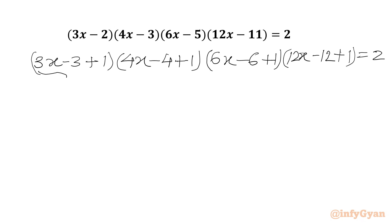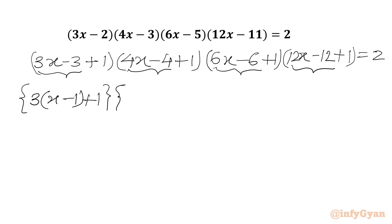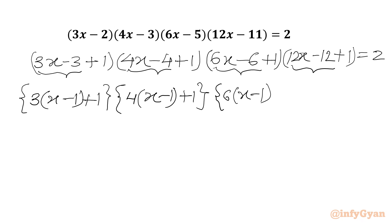Now we can take 3 common here, 4 is common here, 6 is common here, 12 is common here. So we can write 3 times (x minus 1) plus 1 — this is bracket number 1. For the second bracket: 4 times (x minus 1) plus 1. For the third bracket we take 6 common: 6 times (x minus 1) plus 1. And then we write 12 times (x minus 1) plus 1, and RHS is 2.